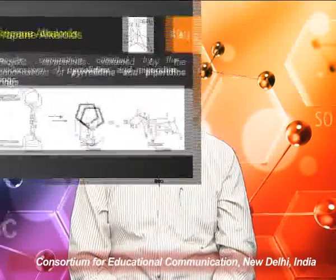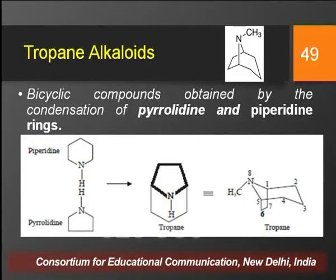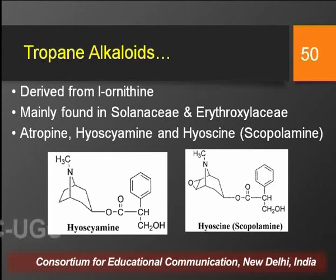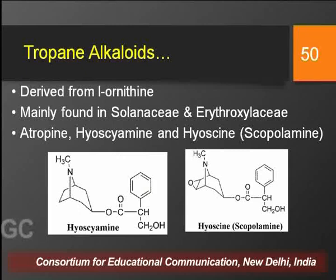Tropane alkaloids have a tropane nucleus in their structure. The tropane nucleus is a bicyclic compound formed by the fusion of a pyrrolidine ring and a piperidine ring. The most common examples are atropine, hyoscyamine, and hyoscine, obtained from solanaceous plants such as Atropa belladonna, Hyoscyamus niger, and Datura stramonium. These alkaloids are largely derived from ornithine and are mainly found in members of the Solanaceae and Erythroxylaceae families.